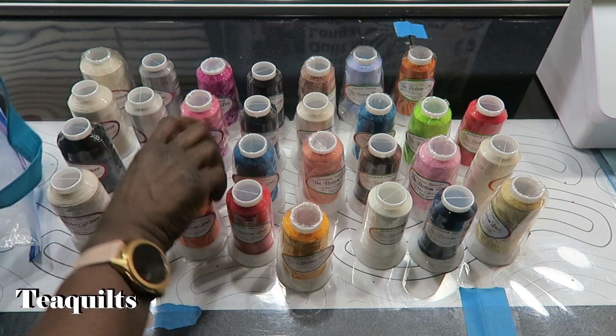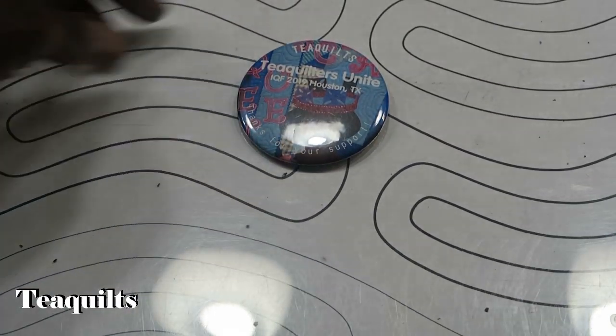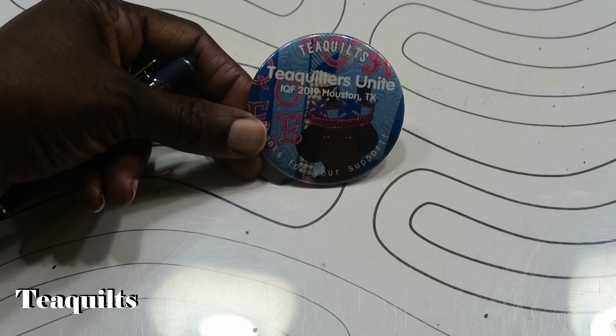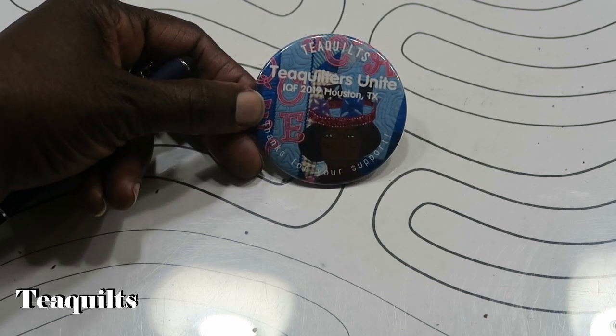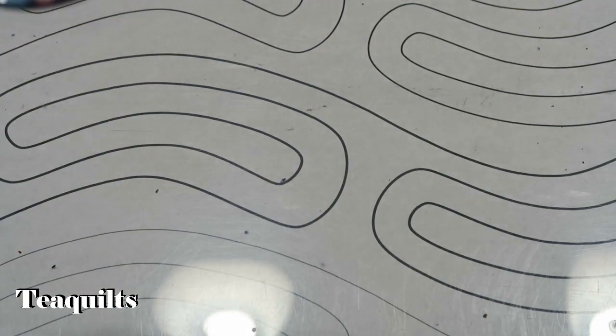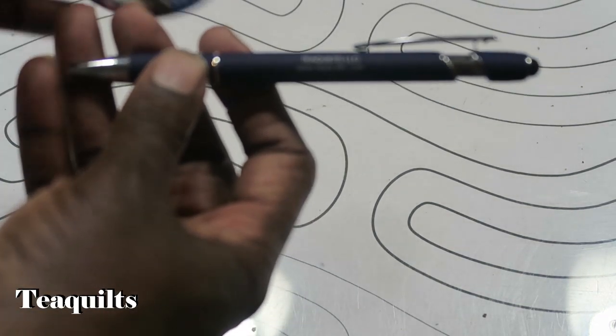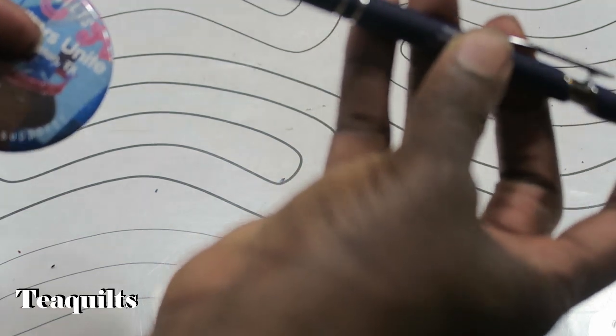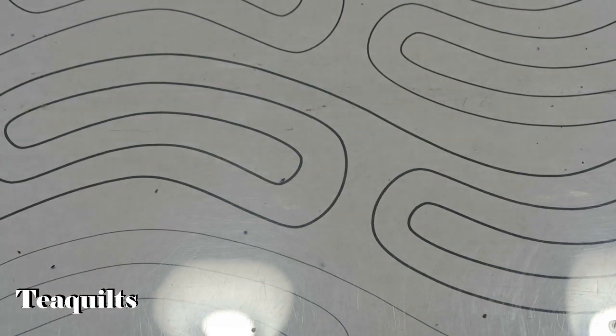At the quilt festival, I gave out these buttons that I made - a T Quilts button that says T Quilters Unite IQF 2019 Houston Texas, and at the bottom it says thanks for your support. I also gave out T Quilts pens with a stylus on one end and an ink pen on the other end. I just took this one out of my bag to show you.